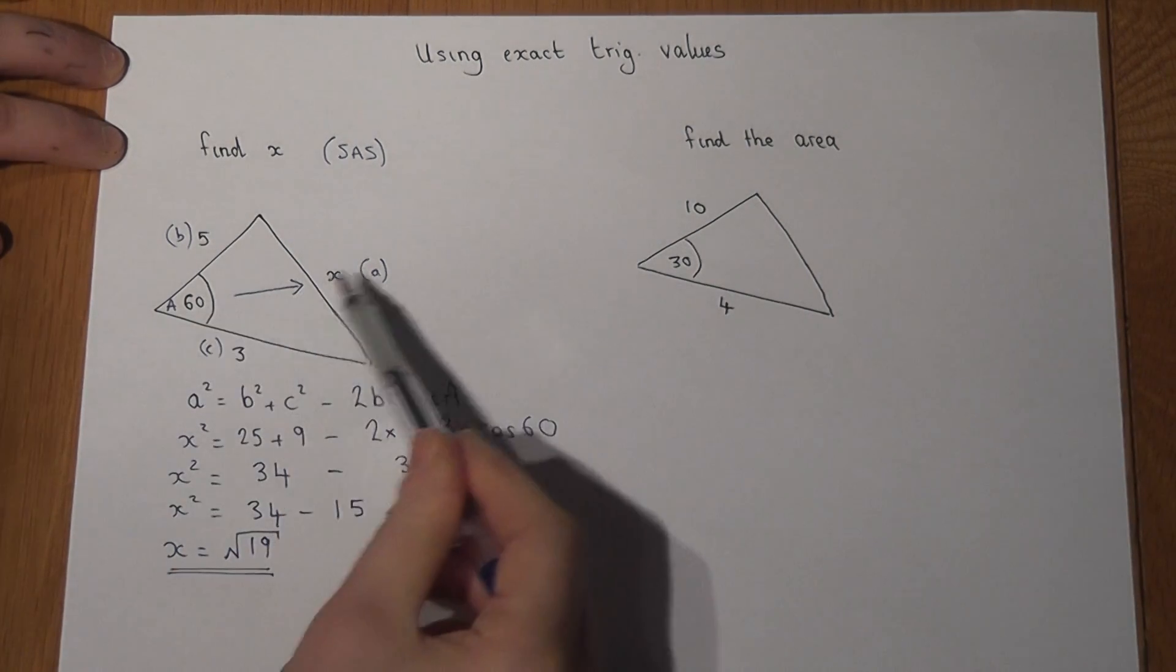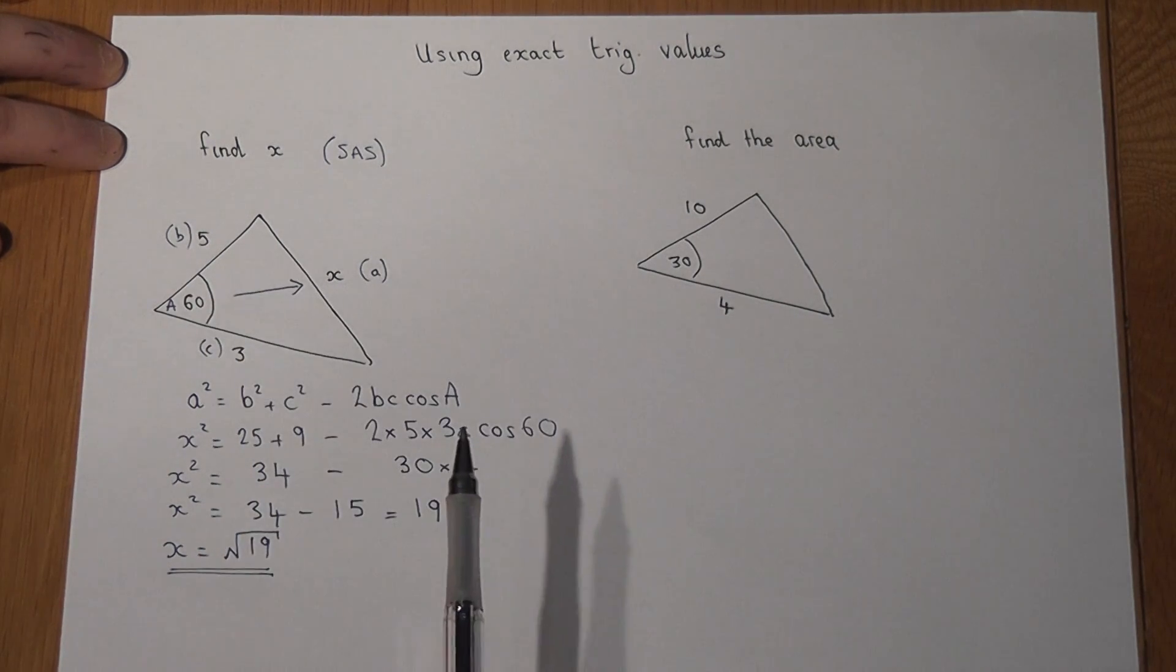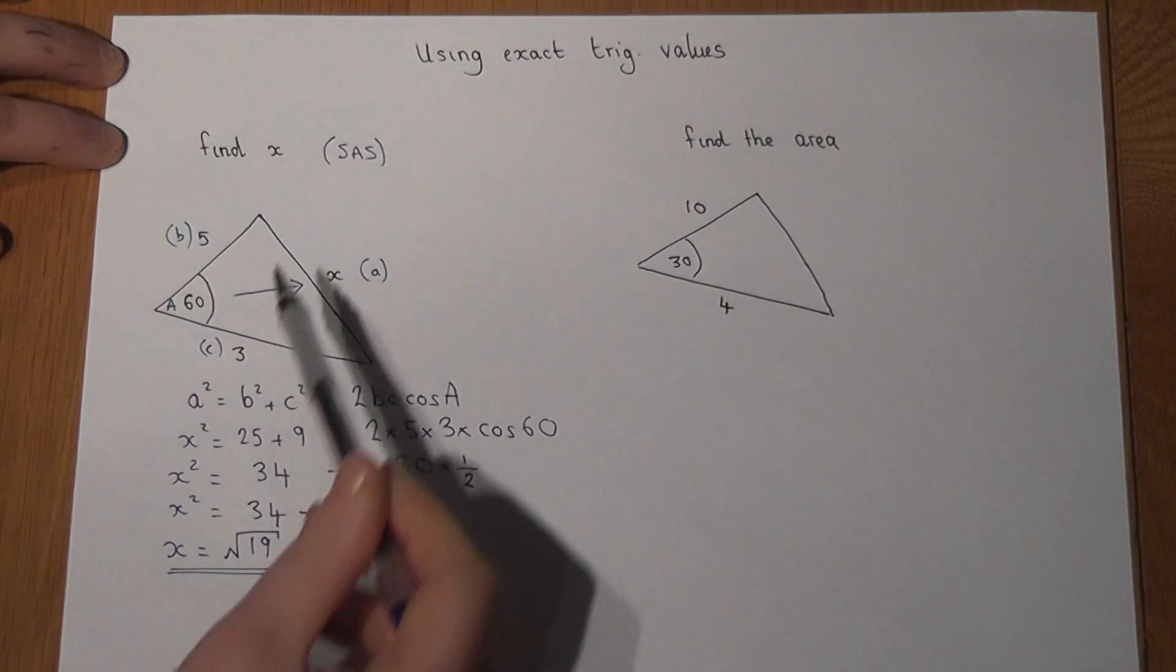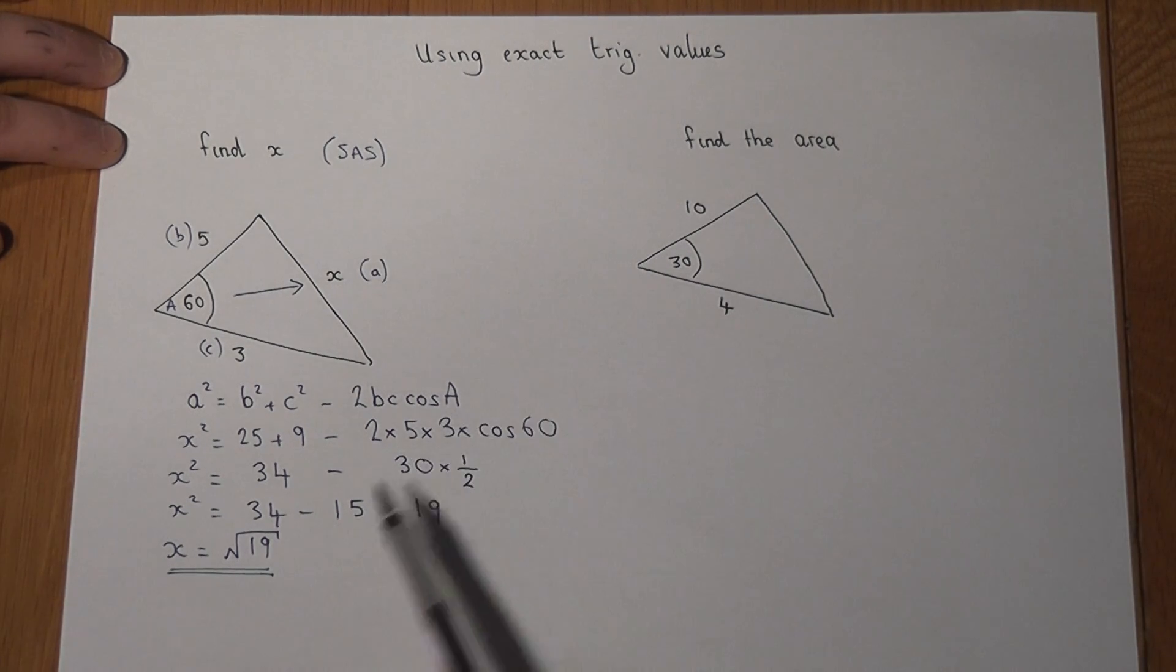So again, the cosine rule is used to find an opposite side if we know two sides and the enclosed angle. And in this case, because we knew the value of cos 60 to be a half, we could finish off the question to get down to a final answer, which in this case was a surd.